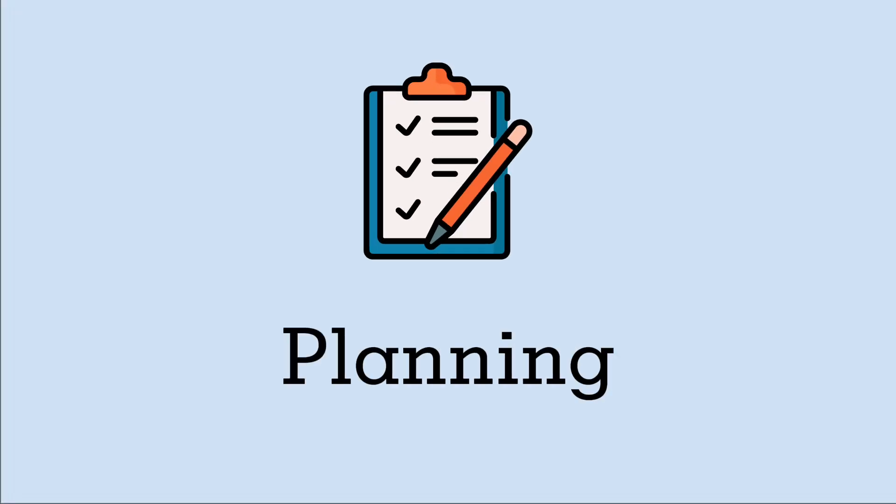Everything I'm sharing is to help you organize your thoughts and communicate clearly so that you can become a software engineer. So let's talk about planning your code. This can be broken down into two sections: clarifying the problem and explaining the algorithm.